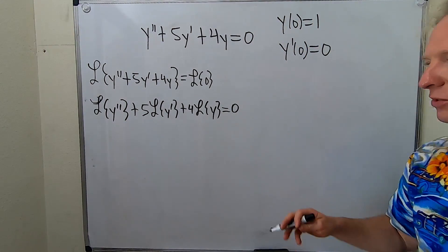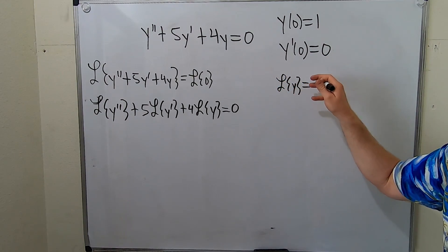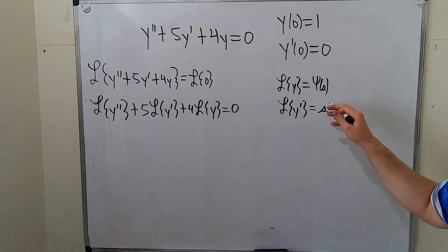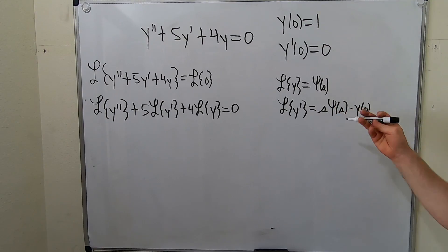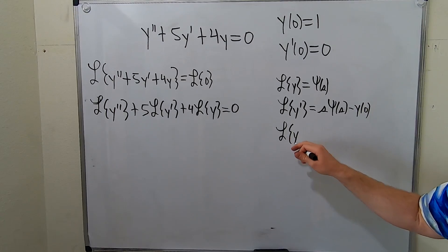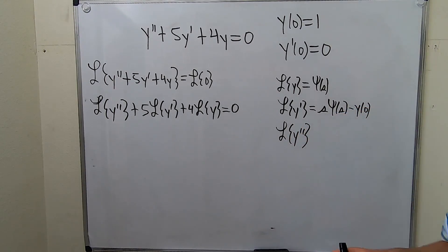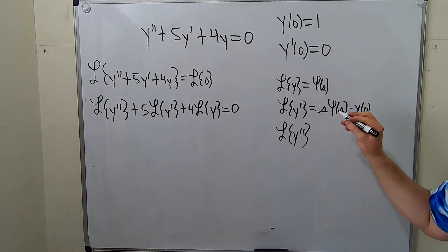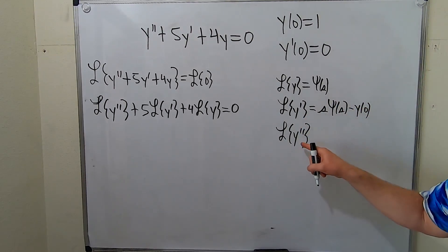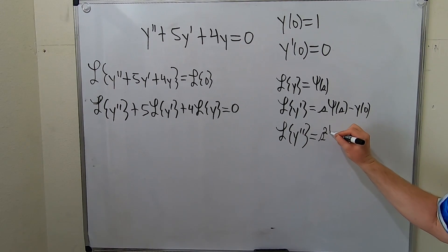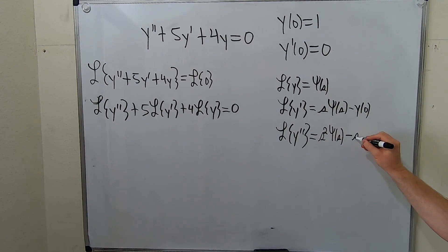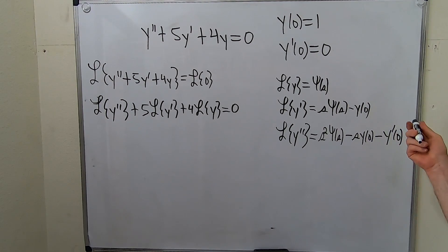I'll write the formulas over here. The Laplace of y, we're going to call that Y(s). The Laplace of y prime is going to be equal to s·Y(s) minus y(0). And for the Laplace of y double prime — notice there's a pattern: this is the second derivative, so it should start with s squared·Y(s). It ends in one less derivative, so it'll be minus s·y(0) minus y prime of 0.